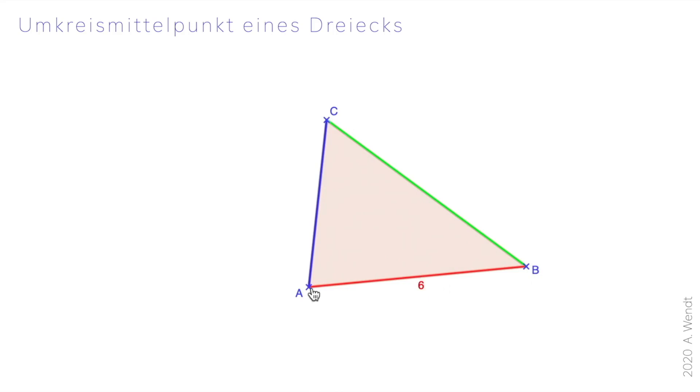Eleganter ist es mit zwei Kreisen. Ich steche den Zirkel in den Punkt A ein und spanne ihn jetzt etwas mehr als die Hälfte von 6 auf. Ich habe jetzt mit 3,5 einen Kreisbogen um A gezeichnet. Dann zeichne ich einen Kreisbogen um B mit der gleichen Anstellung. Da ergeben sich jetzt zwei Schnittpunkte dieser Kreisbögen. Die verbinde ich und erhalte die Mittelsenkrechte auf dieser Seite AB.